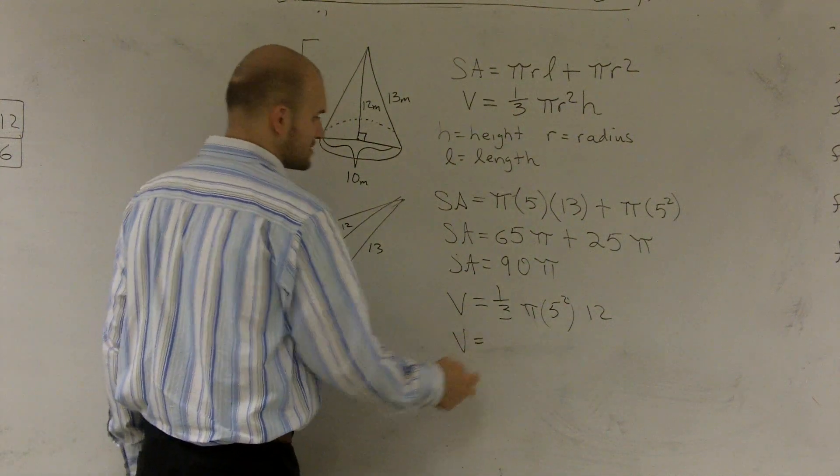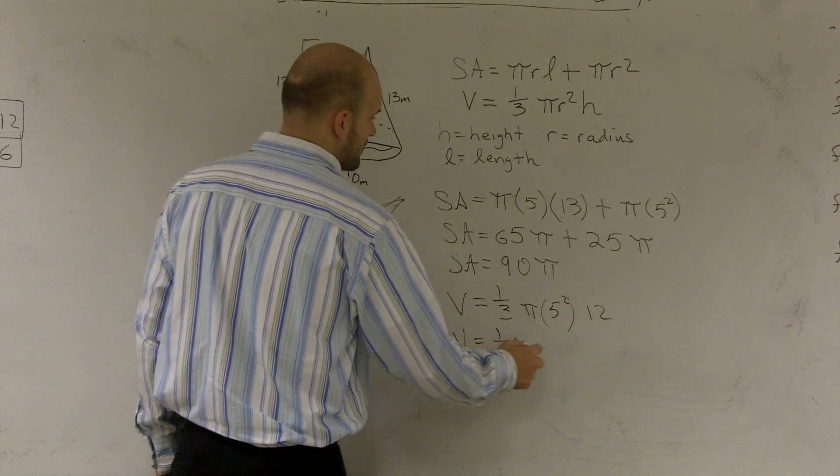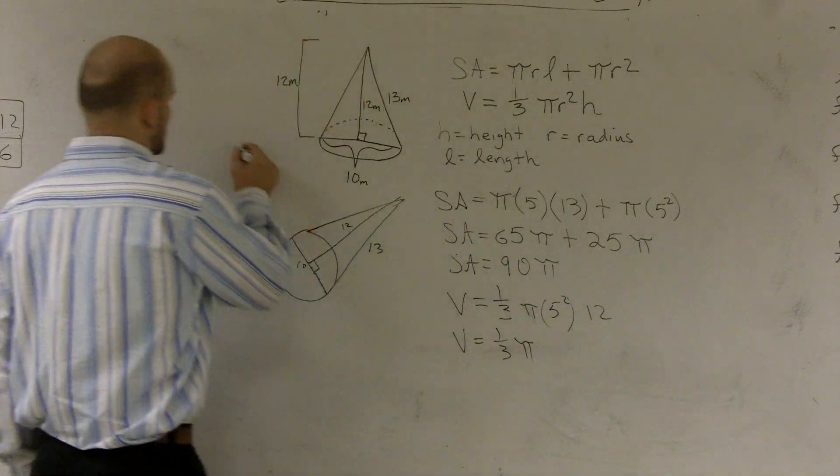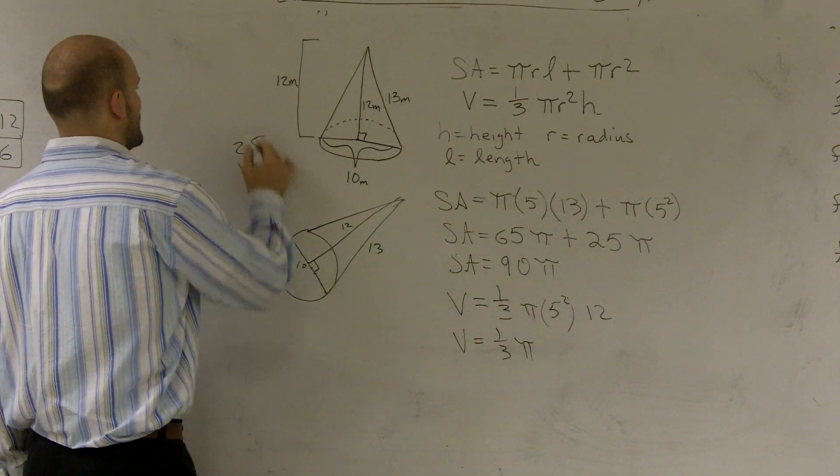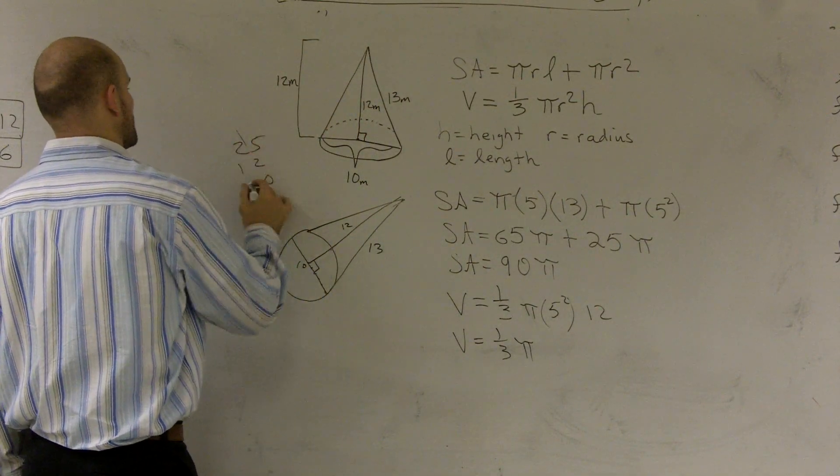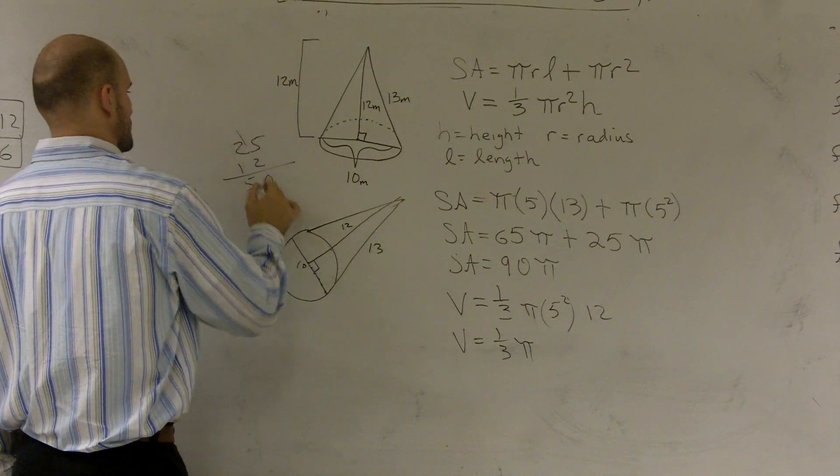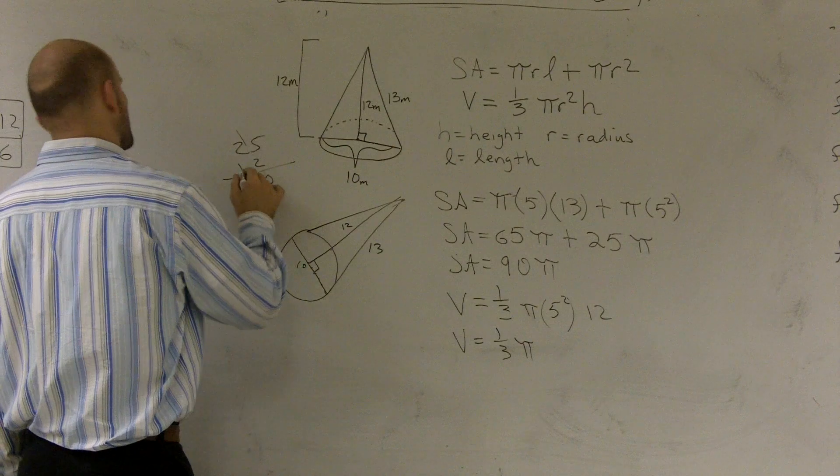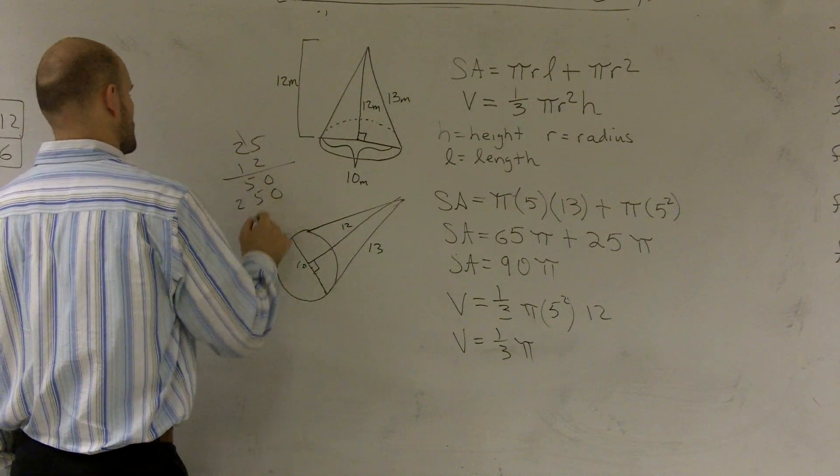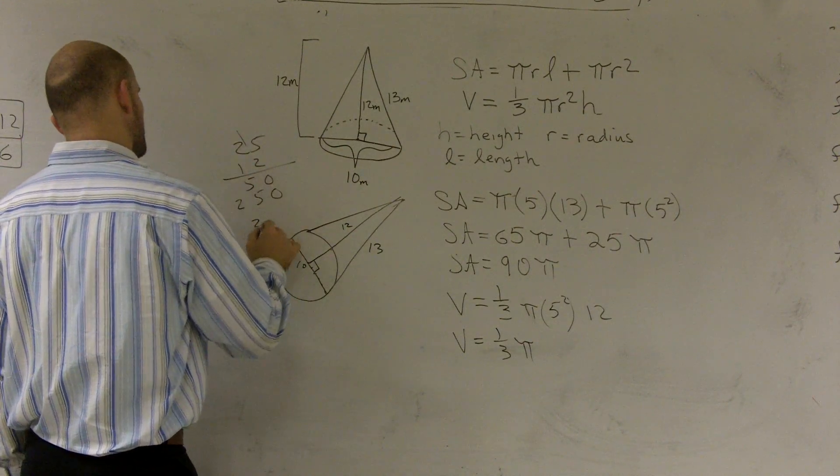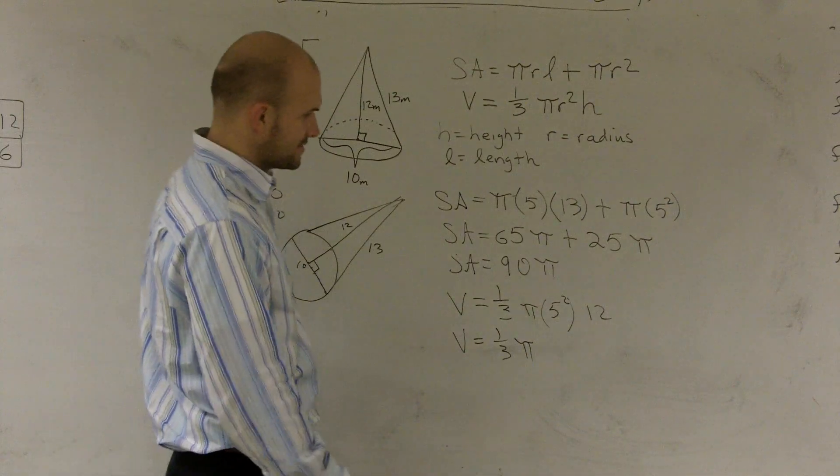Volume equals 1/3 times pi times 25 times 12. So it's going to be... 25 times 12 would be 300.